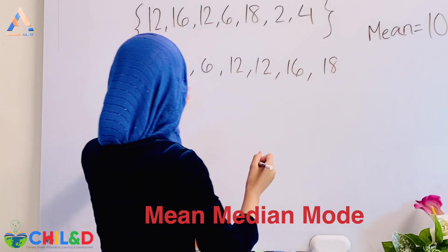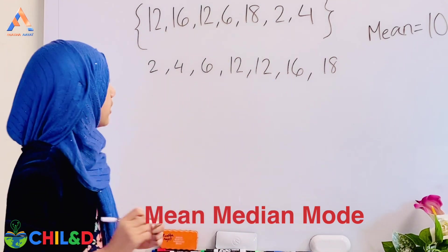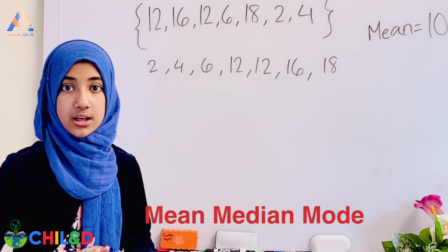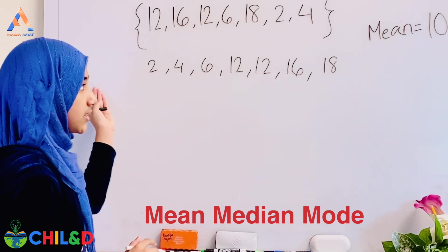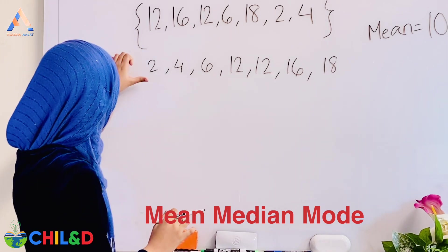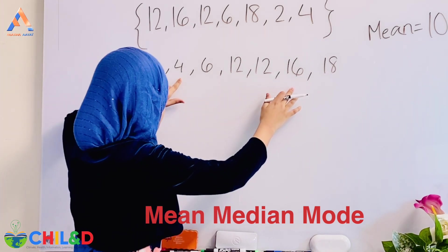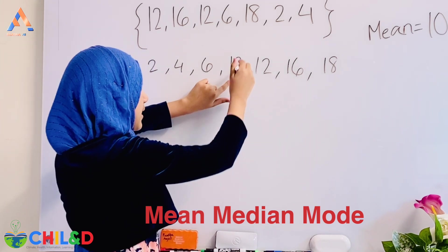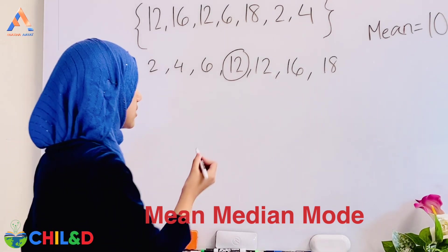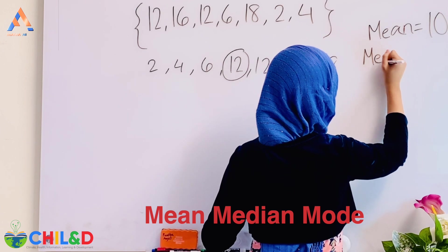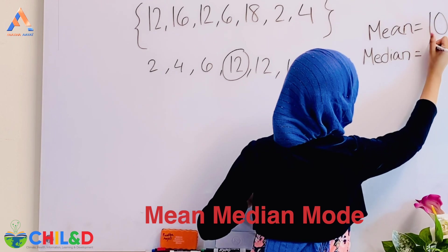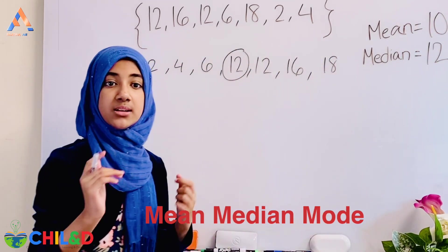We have arranged the numbers in ascending order. Now we find the median by going to the middle point. Crossing off from both ends — 2, 18, then 4, 16, then 6 — we are left with 12 in the middle. So the median is 12.